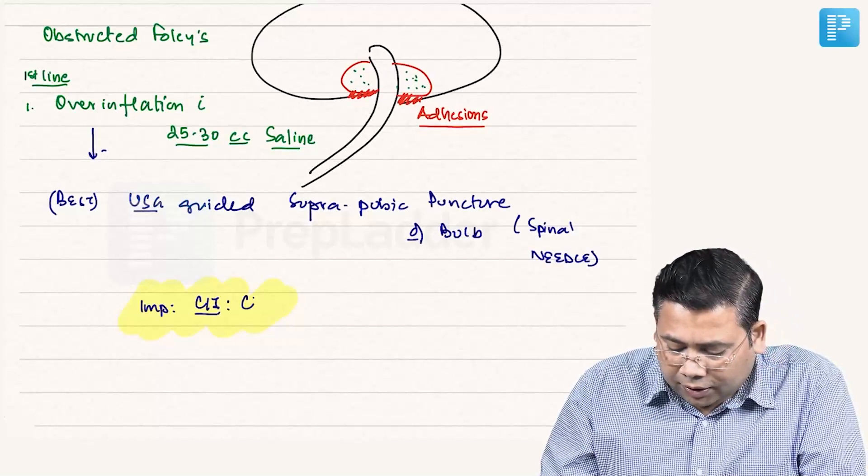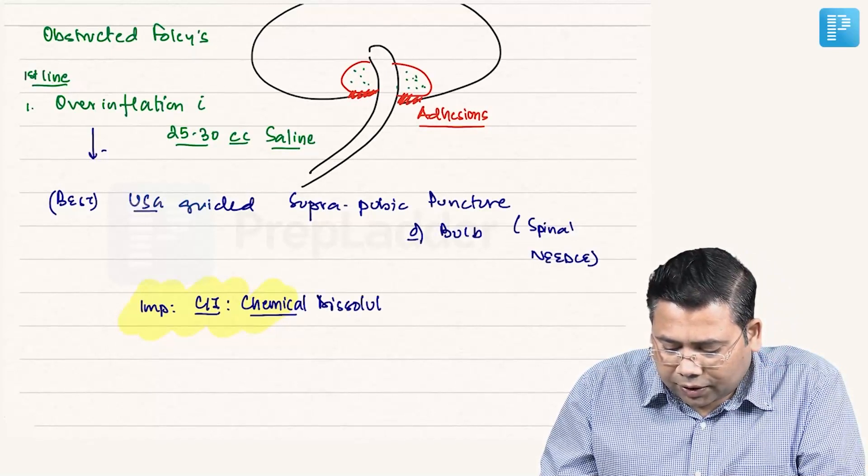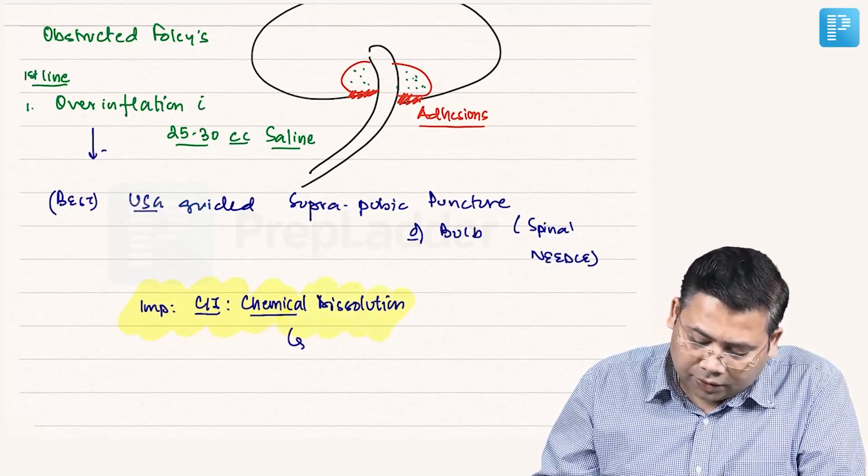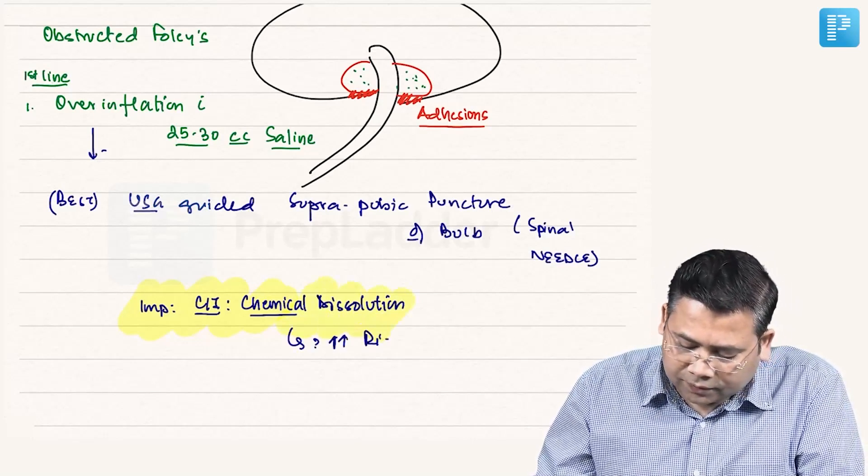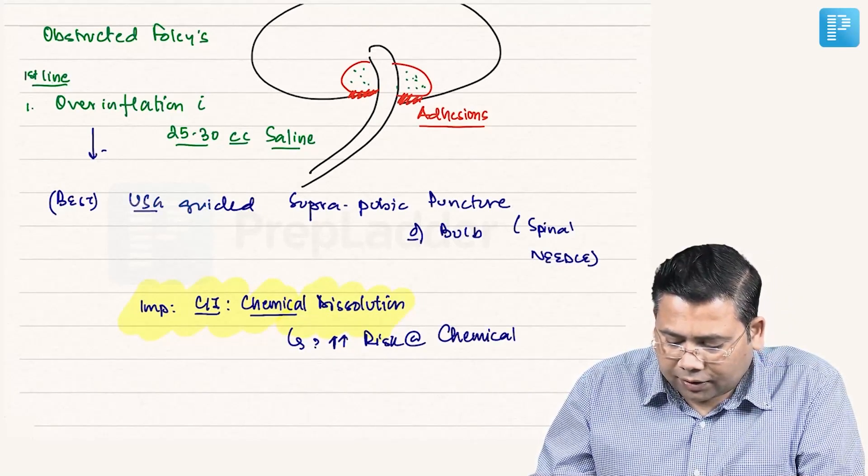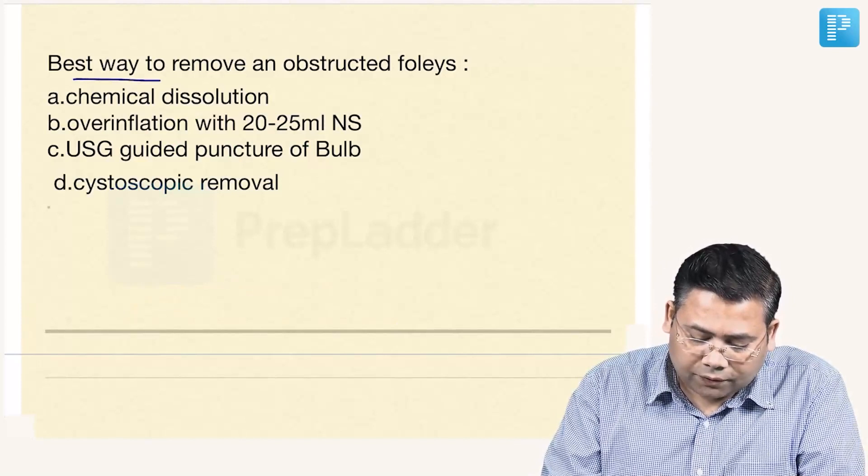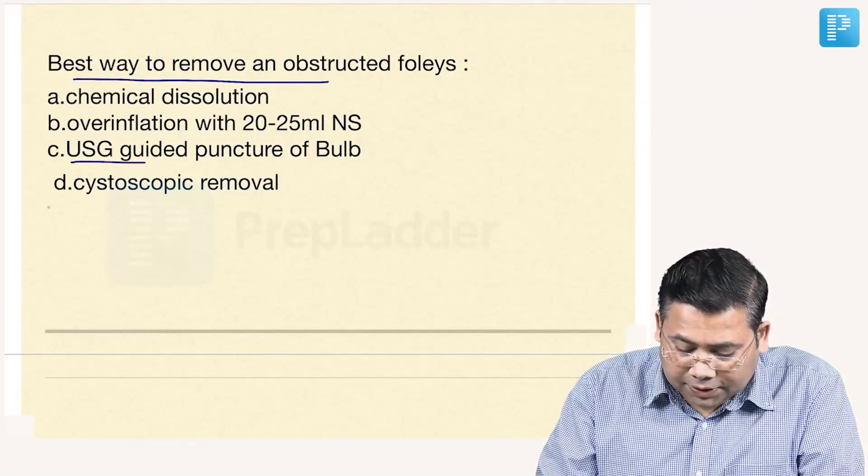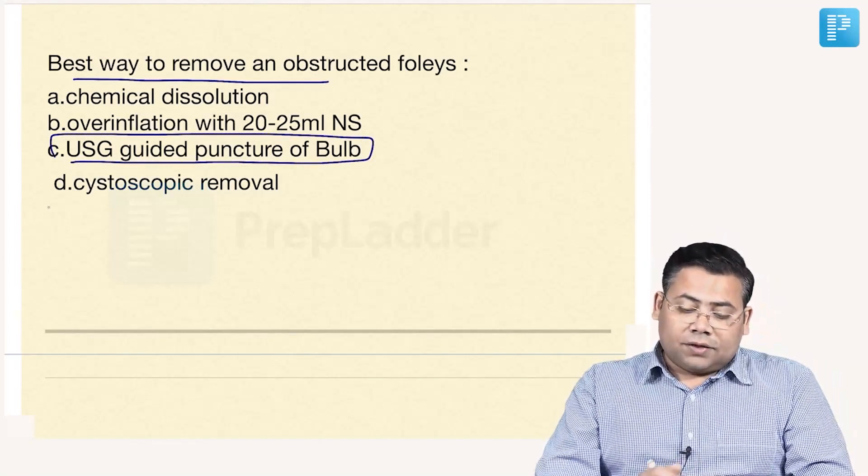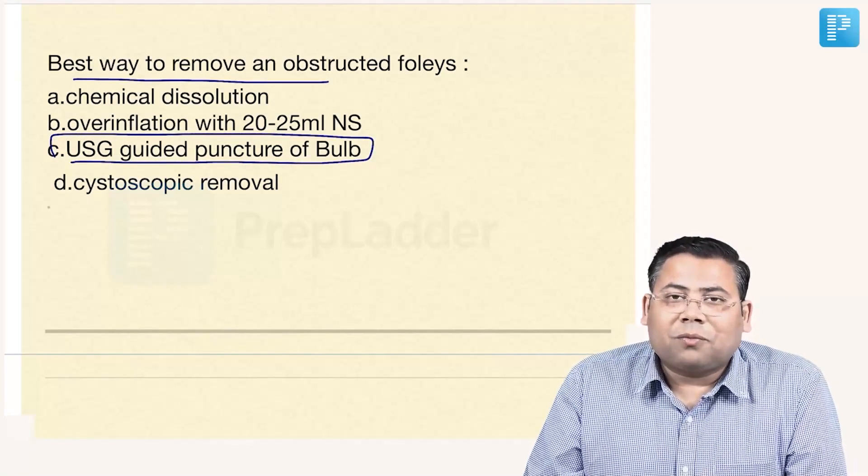Important thing that you all have to understand that today, chemical dissolution is absolutely contraindicated. Chemical dissolution is absolutely contraindicated. When we talk about chemical dissolution, why? Because there is increased risk of chemical cystitis. So increased risk of chemical induced cystitis and that is why it is absolutely contraindicated. So if you go to this question, the best way answer is USG-guided puncture. If I change the question and say, which is not, so answer will be the chemical dissolution and cystoscopic removal is not possible for a foley.